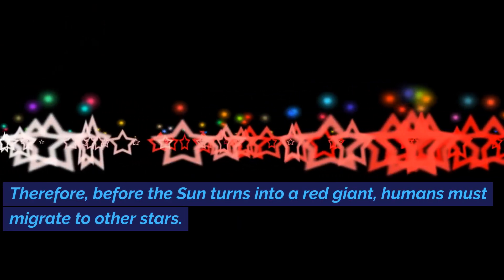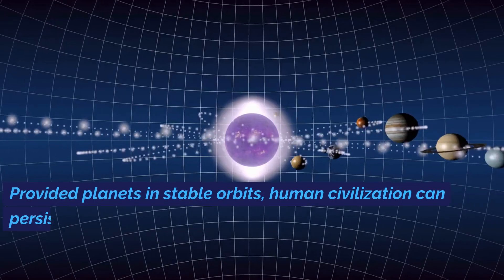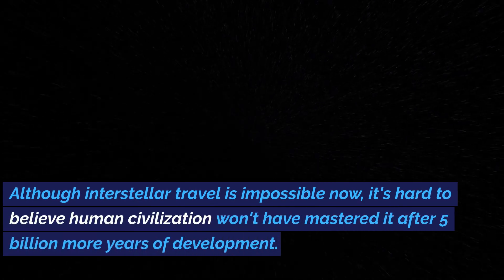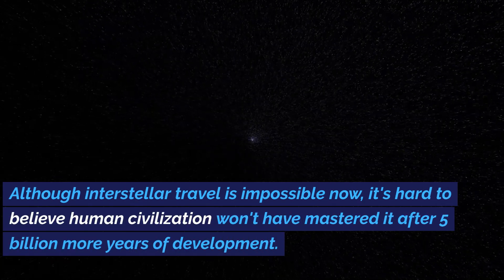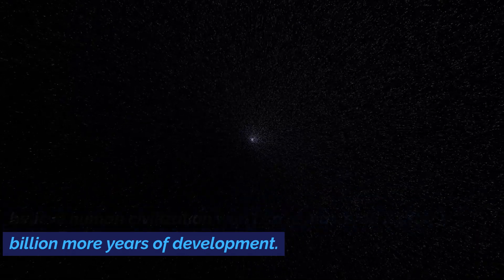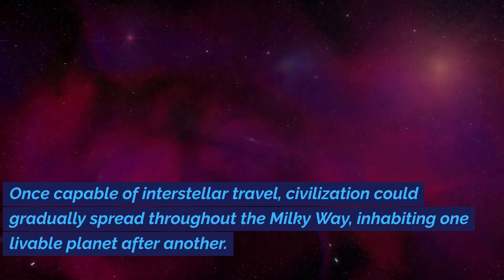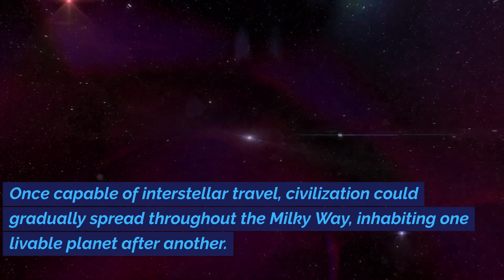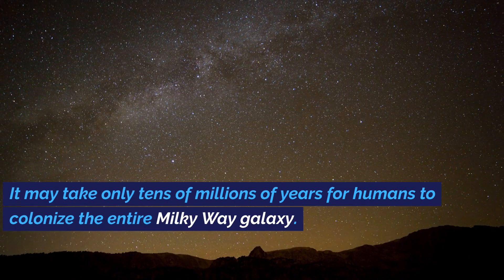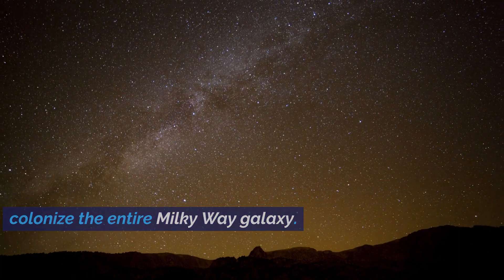Therefore, before the Sun turns into a red giant, humans must migrate to other stars. Provided planets in stable orbits, human civilization can persist. Although interstellar travel is impossible now, it's hard to believe human civilization won't have mastered it after 5 billion more years of development. Once capable of interstellar travel, civilization could gradually spread throughout the Milky Way, inhabiting one livable planet after another. It may take only tens of millions of years for humans to colonize the entire Milky Way galaxy.